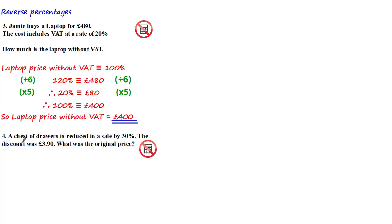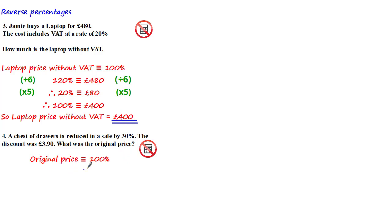Let's try the next question. A chest of drawers is reduced in a sale by 30%; the discount was £3.90. What was the original price? We have to be careful here because we're not told the new amount after the percentage change — instead we're told what the percentage change, 30%, is equivalent to. Using the proportion method, we say the original price is equivalent to 100%, and from the question we can say that 30% is equivalent to £3.90.